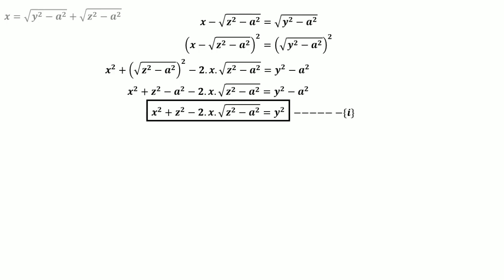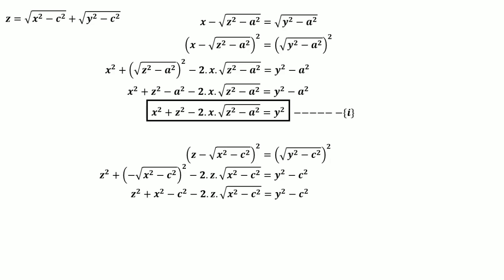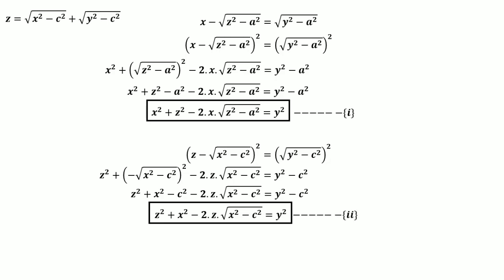Now looking at the z equation, subtracting the square root of (x² − c²) from both sides and squaring. Using the (a + b)² formula and adding c² to both sides, we get z² + x² − 2z·√(x² − c²) = y². Call this Equation 2. Since both equations have y² on the right-hand side, we can equate them.